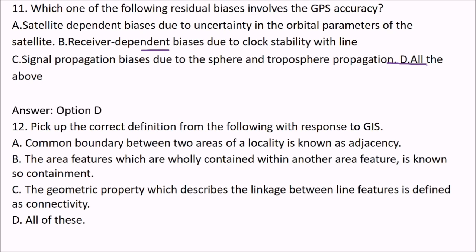Next question: pick up the correct definition from the following with respect to GIS. You need to be precise about GIS definitions because all four options are somewhat related. The answer is D — all of these — because in GIS: the common boundary between two areas is known as adjacency; an area feature wholly contained within another is known as containment; and the geometric property describing linkage between line features is defined as connectivity.